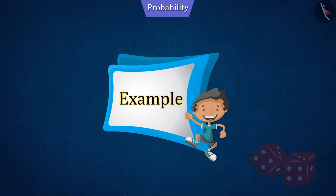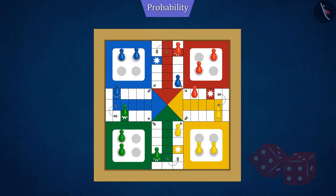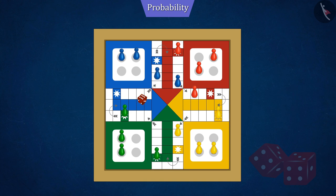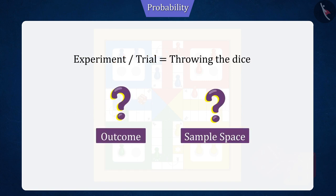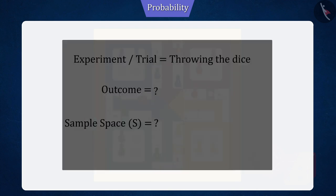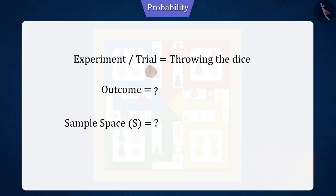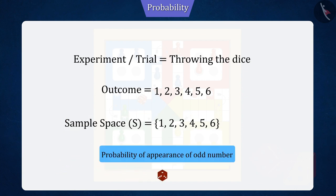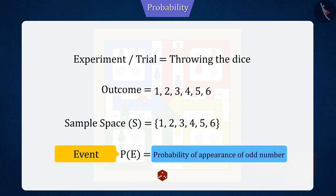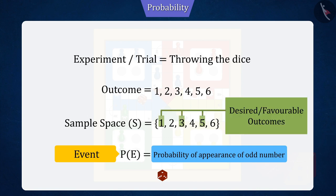Let's see another example. You must have played Ludo at some time. In the game of Ludo, we roll a dice. If rolling a dice is an experiment, can you tell the outcome and sample space for it? You can pause the video and try. For an experiment of rolling a dice, the outcomes are the numbers on the dice, and set S will be the sample space. If we want to find the probability of an odd number appearing when the dice is thrown, then the appearance of an odd number is an event, for which 1, 3, and 5 will be the desired or favourable outcomes.